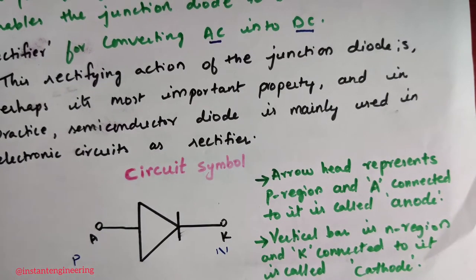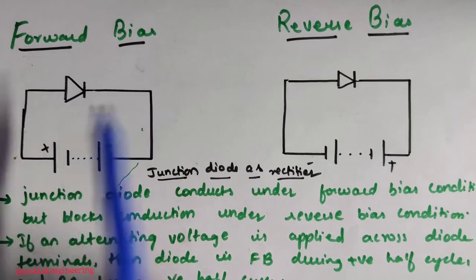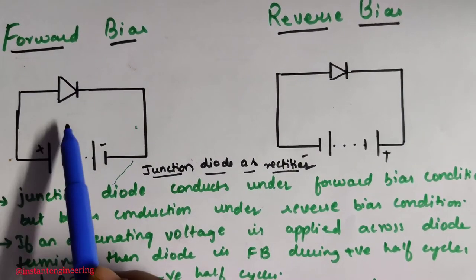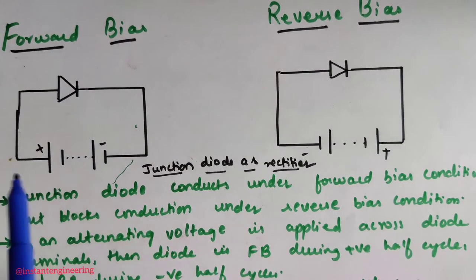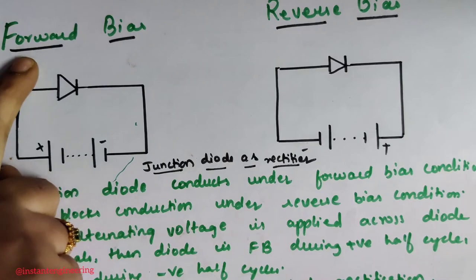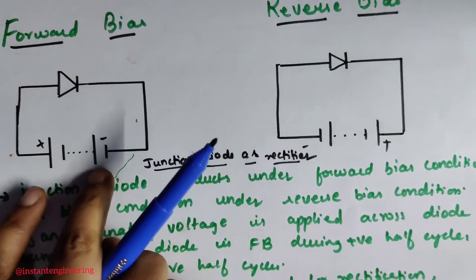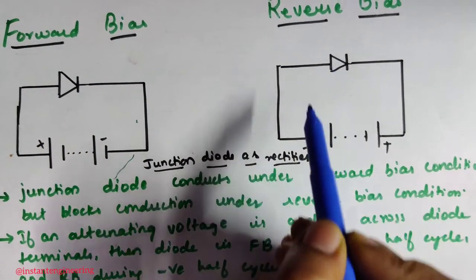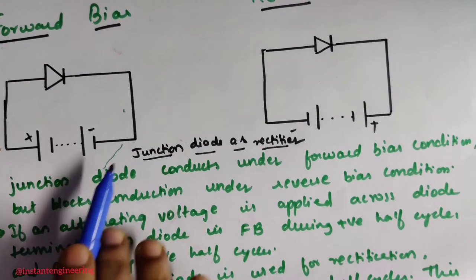Now we will see what is forward bias and reverse bias. In forward bias, the positive terminal of the supply is connected to the anode and the negative terminal to the cathode — matching the positive-negative orientation of the diode. In reverse bias, the negative side is connected to the anode and the positive side to the cathode, so the connections are reversed.